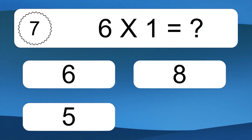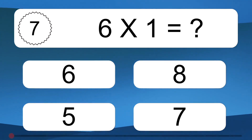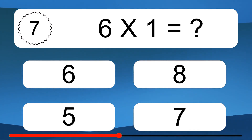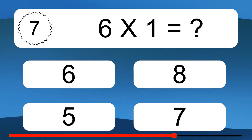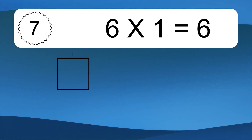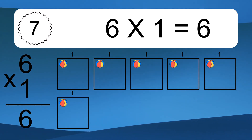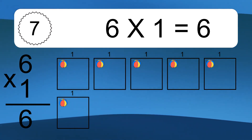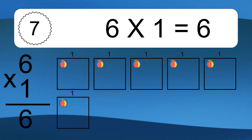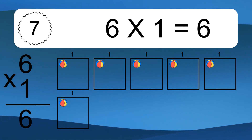Six times one equals what? Six times one equals six. We have six boxes, and each box has one colorful ball inside. If you count all the balls in all the boxes together, you will have six times one balls. This equals six balls.